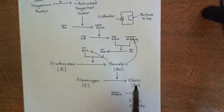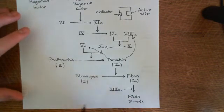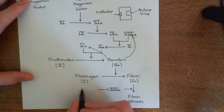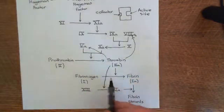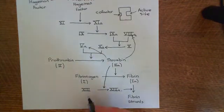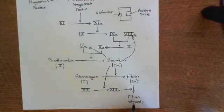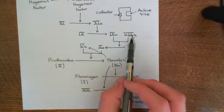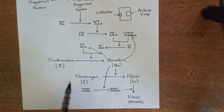Thrombin then converts fibrinogen to fibrin, and fibrin is polymerised into fibrin strands by factor 13a. Factor 13 is activated to factor 13a by thrombin. So thrombin not only converts fibrinogen to fibrin, but it also converts factor 13 to 13a, and then 13a polymerises the fibrin together to make fibrin strands. Meanwhile, thrombin also has the action of increasing the levels of 8a and 5a in the plasma, and this leads to a positive feedback of the activation of thrombin.